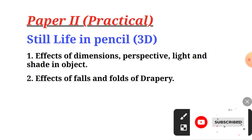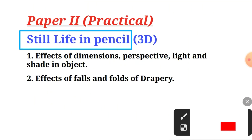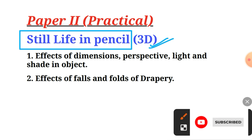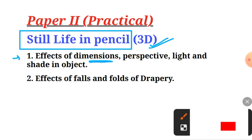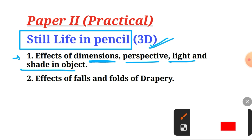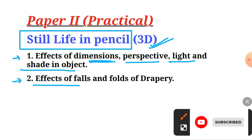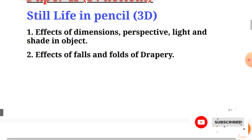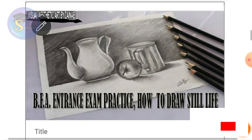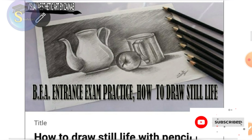For the practical paper, draw a still life with the help of pencil, showing the effect of three-dimensional form — light, middle, and dark tones. This includes effects of dimensions, perspective, light and shade in objects, and effects of folds and forced draperies. Here I can show you this still life example.